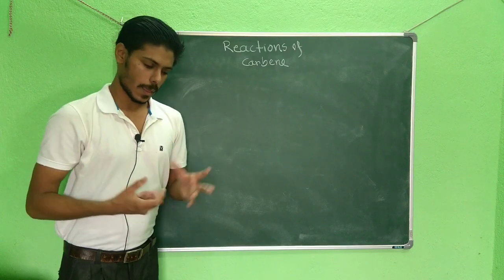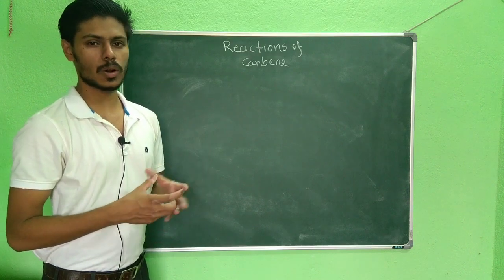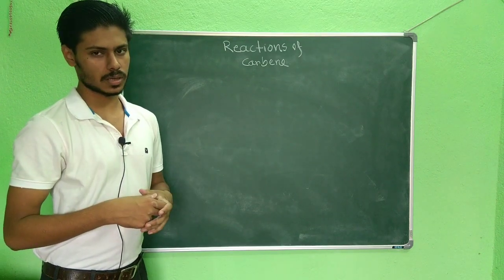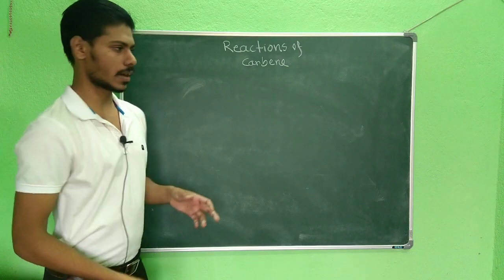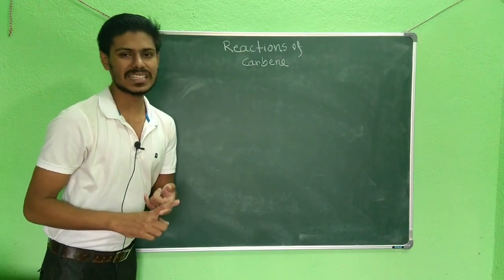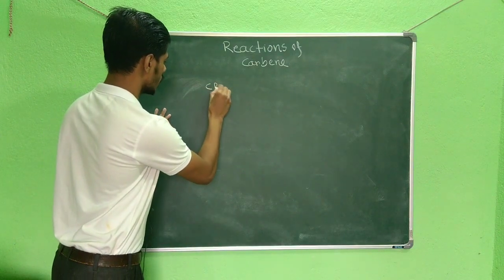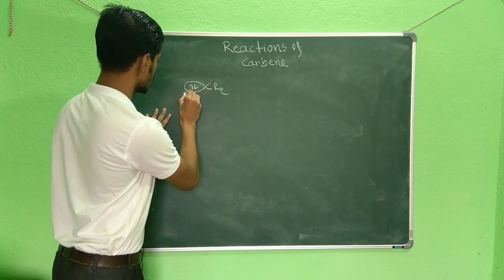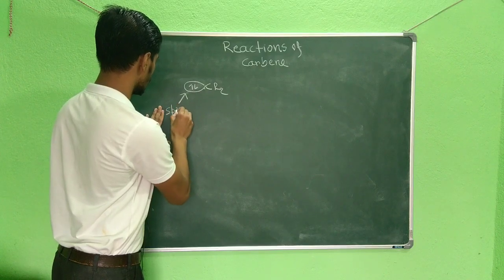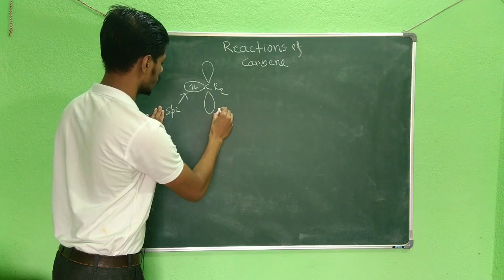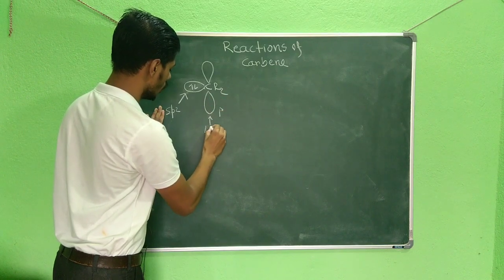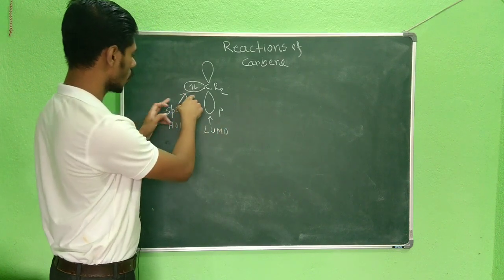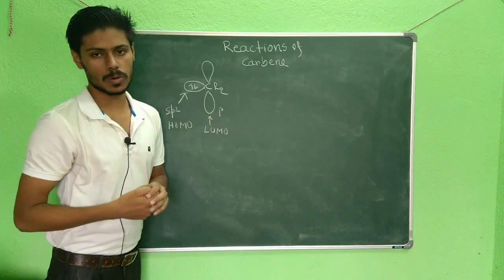Now let us look at the molecular orbital picture — what are the important orbitals involved in the reaction. In the case of singlet carbene, it has two important orbitals: the sp² hybrid orbital, which is the HOMO (filled), and the vacant p orbital, which is the LUMO. For the alkene, the pi bond is the HOMO and the pi* is the LUMO.